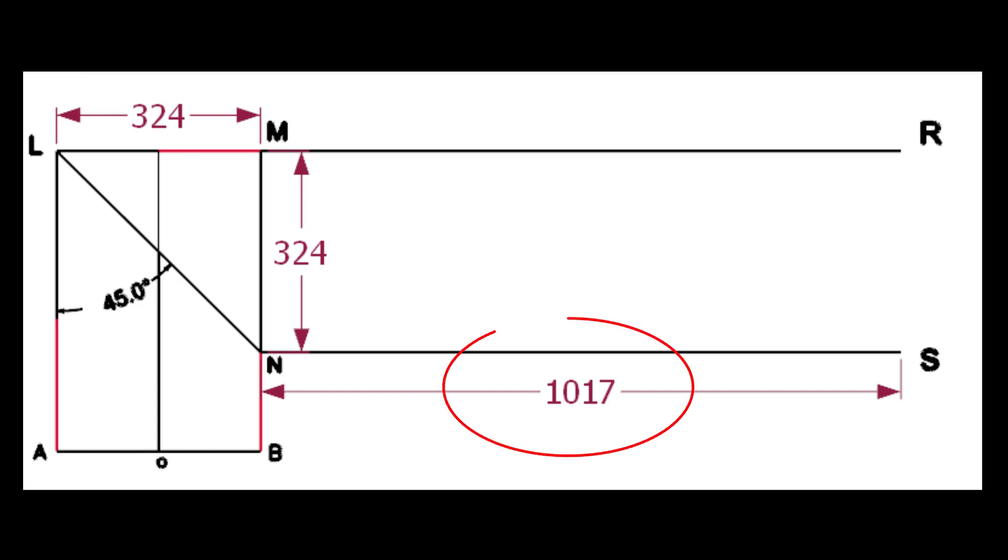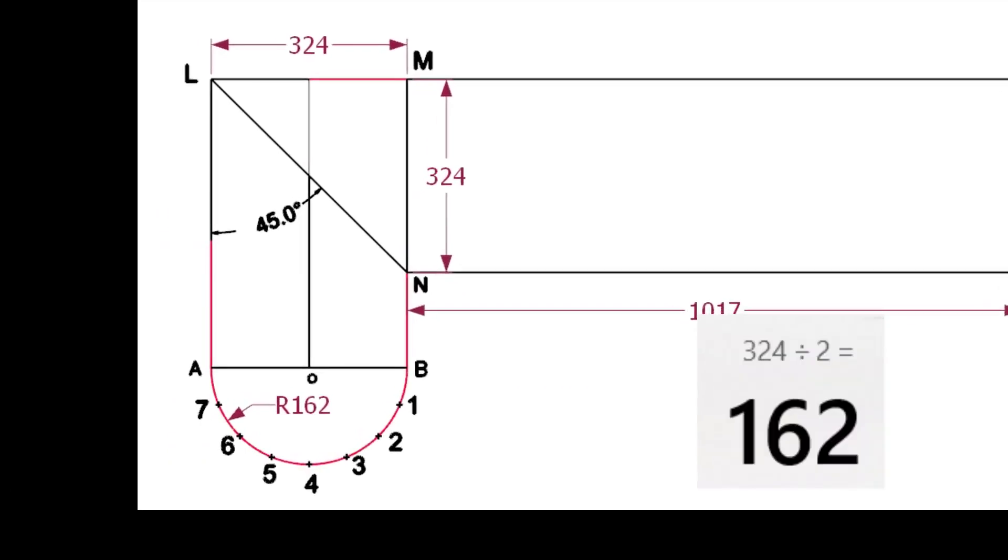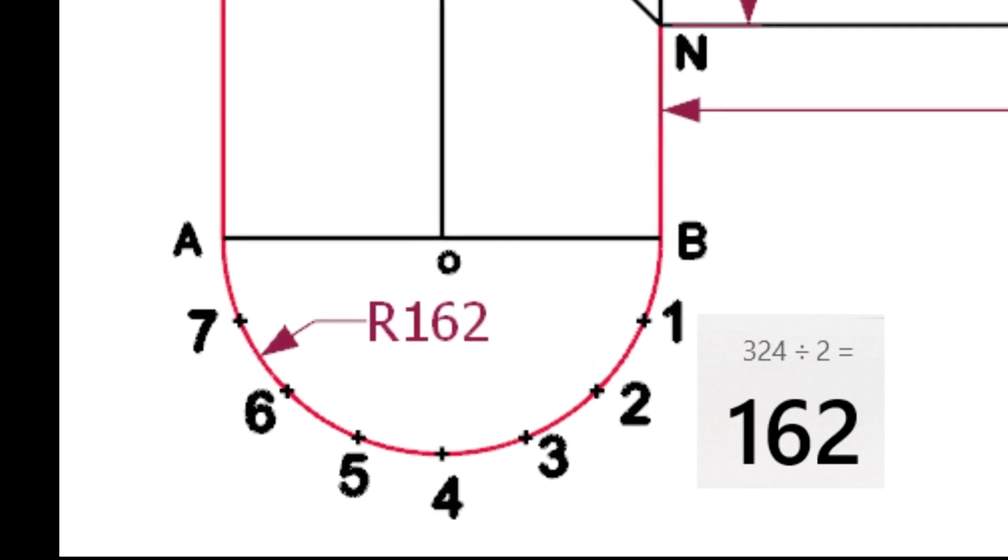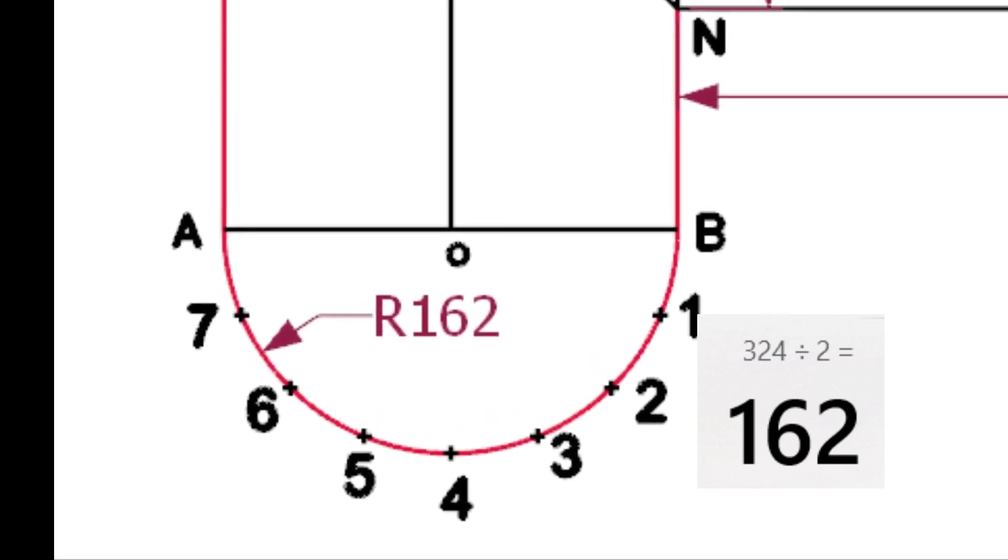We know the circumference of the pipe is 1017 millimeters. Draw the lines MR and NS. Draw a half circle centering O and divide the circumference into eight equal parts.